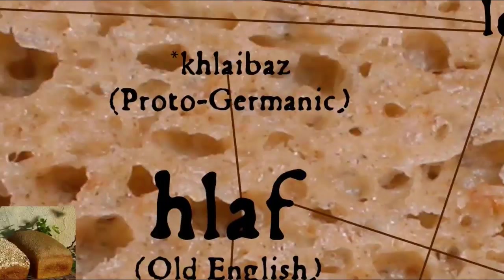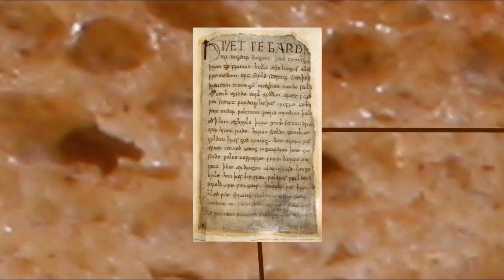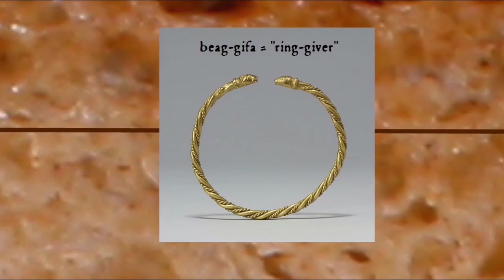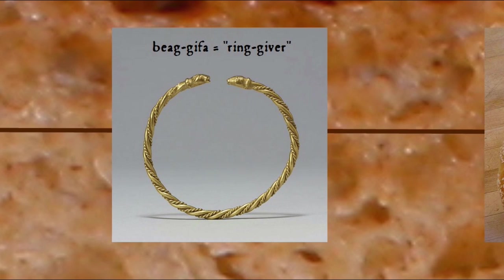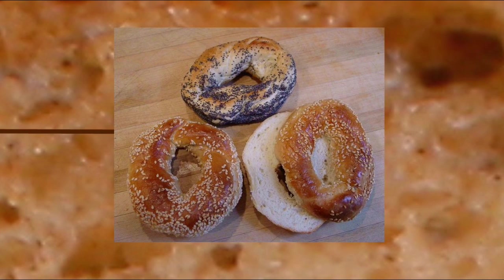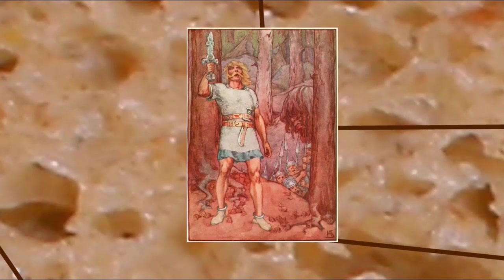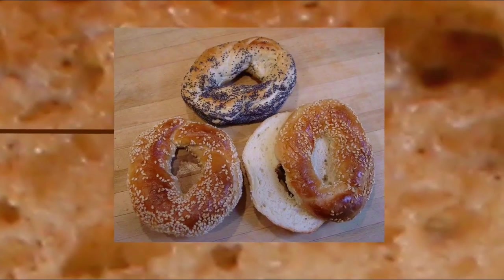While we're on the topic of early Germanic terms for kings, in Old English poetry the king or lord is often referred to as a beag-giefa, literally ring-giver, again because of the importance of generosity to the comitatus. The lord gives gold arm rings and other treasure to his followers. The first part of that word, beag, meaning ring, is related to the word bagel — a ring-shaped bread. So you might say that in the Old English epic poem Beowulf, the hero Beowulf is rewarded with bagels for going to Denmark to stop the man-eating monster Grendel from eating all the danishes.